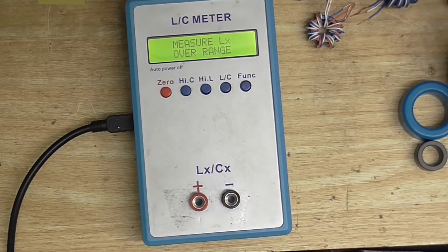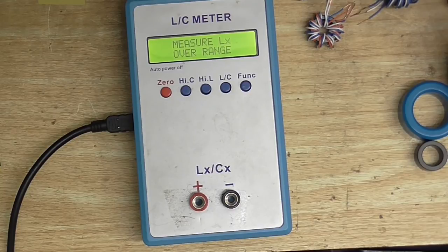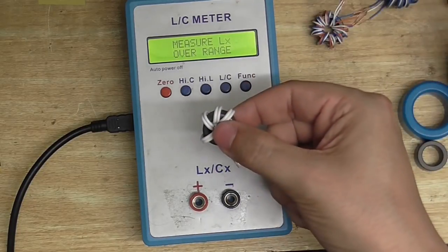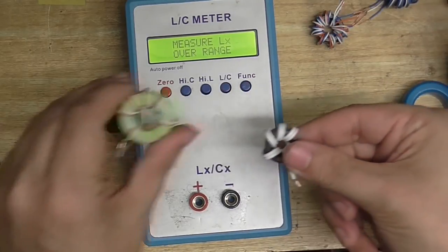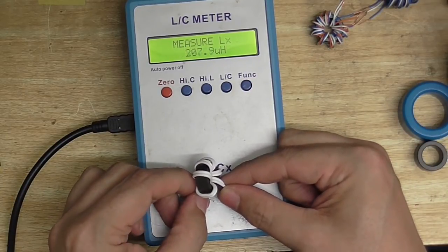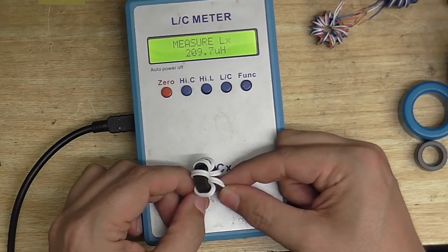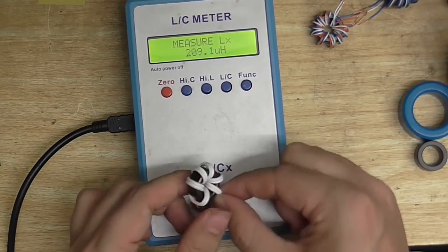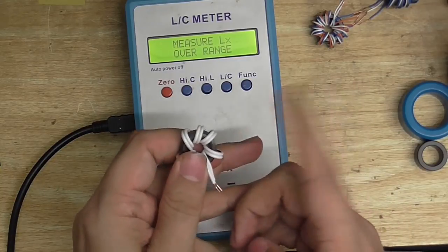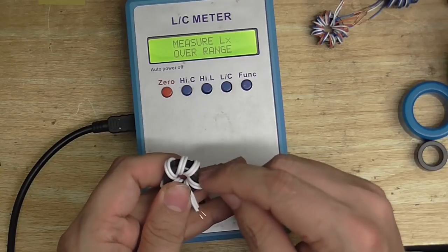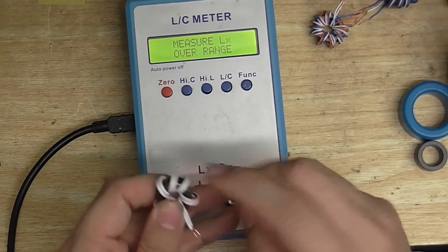And this is 5.7 microhenry. Now, the number of turns that you use isn't the only thing that determines the inductance. For instance here, I have another coil. It's about the same amount of turns as this. And you can see this one is about 209 microhenry. And that's not because this one is smaller. It's because of what material the actual core is made of.